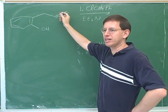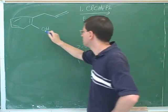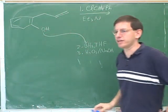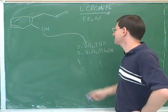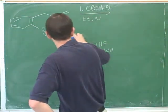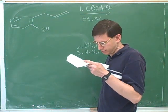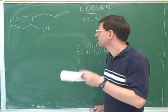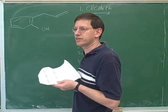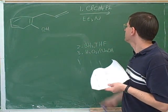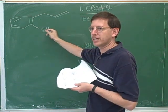They want the BH3 to be attacked by the double bond, but they also have this alcohol group that would tend to attack BH3 — because this oxygen is nucleophilic and the boron is electrophilic, making it a competing reaction. So what they need to do is protect this hydroxy group so that it doesn't attack the boron. They're going to turn it into an ether, because ethers are less reactive. Notice they're using a base here.